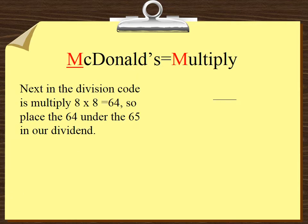McDonald's equals multiply. Next in the division code is multiply. 8 times 8 equals 64. So place the 64 under the 65 in our dividend.